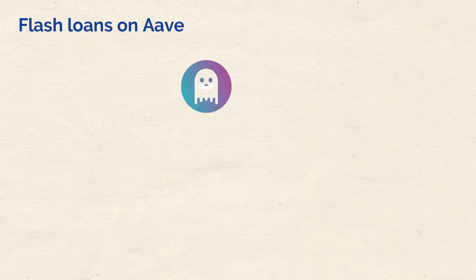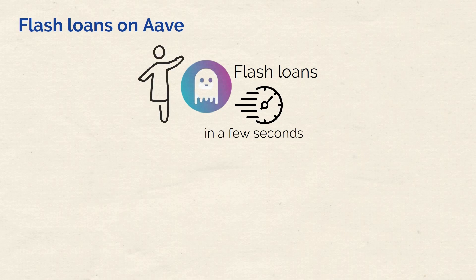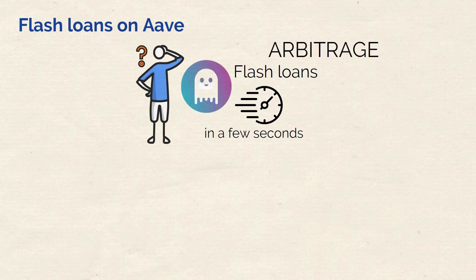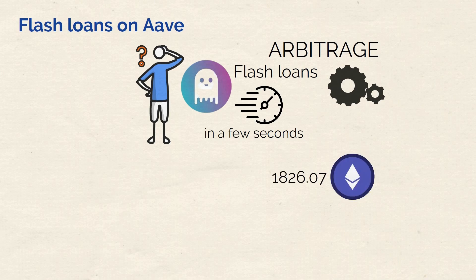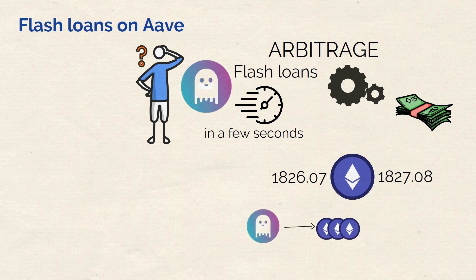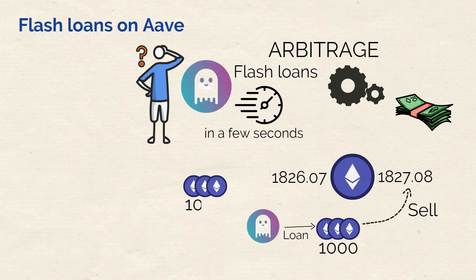Have you ever heard of flash loans? Flash loans on Aave are exactly what they sound like — they are loans, but you have to repay them back super fast, like in a few seconds. Why would anyone want a loan they have to pay back immediately? The answer is arbitrage. With complex markets running constantly, sometimes the price of Ethereum tokens on one exchange might be just a bit higher than on another. Even a small difference creates an opportunity to make money. Using the flash loan system, you could borrow 1,000 Ethereum tokens from Aave, sell them on the exchange with the higher price, then use that money to buy 1,000 Ethereum tokens from the exchange with the lower price before returning your loan to Aave. The difference in prices would be yours as profit, all within just a few seconds.